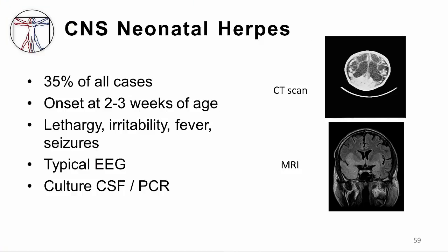The third form of neonatal herpes is CNS involvement, representing about a third of all cases, and it has the latest age of onset, typically occurring between the second and third week of life. The baby presents with lethargy, irritability, fever, and seizures. Seizures in a baby of this age — you must consider herpes. A lumbar puncture should be obtained and CSF analyzed by PCR to detect herpes. There is a typical EEG abnormality in these babies, and neuroimaging — either CT scan or MRI — will show severe destruction or, as in the bottom picture, some temporal lobe involvement.